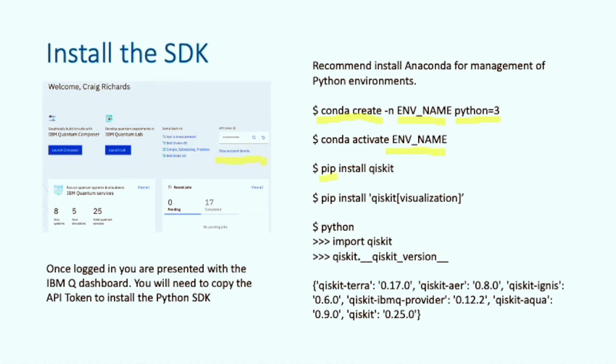Once the conda environment is set up and active, simply issue the pip install Qiskit command to install the Qiskit SDK. You'll need to separately install the visualization kit. Note on Z-Shell, you need the parentheses around Qiskit visualization. Once the installation completes, execute Python. Import the Qiskit SDK and then issue the following command: qiskit.__qiskit_version__. This should return the output below, giving you the versions of the packages that have been installed. If you see this, then you have completed the installation correctly.